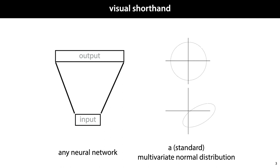In the rest of the lecture, we will use the following visual shorthand. The diagram on the left represents any kind of neural network. We don't care about the precise architecture, whether it has one or a hundred hidden layers and whether it uses fully connected layers or convolutions. We just care about the shape of the input and the output.